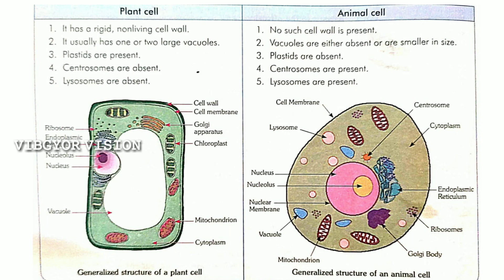Cell wall is present in plant cell and absent in animal cell. Next, the nucleus: in plant cell the nucleus is present on one side, and in animal cell it is present in the center. Next, plastids: in plant cell plastids are present, and in animal cell plastids are absent.